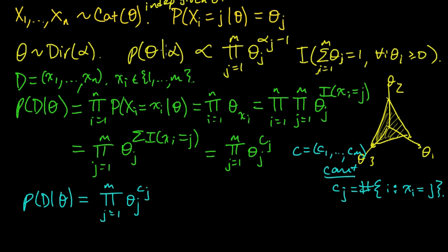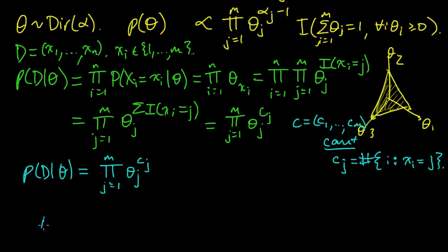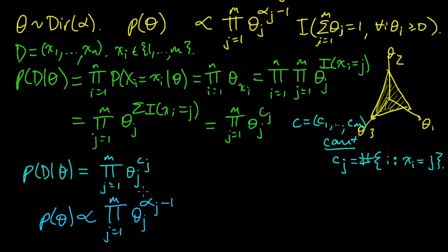So the likelihood function equals the product over j from 1 to m of theta_j to the c_j. Our prior on theta is proportional to the product over j from 1 to m of theta_j to the alpha_j minus 1. These two expressions look very similar, and this is what conjugacy looks like in this particular case — it's going to show us that the Dirichlet distribution is a conjugate prior for the categorical distribution.